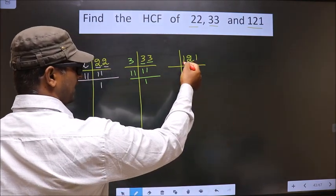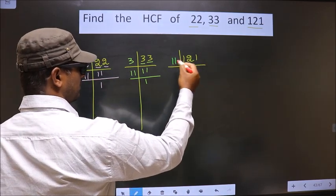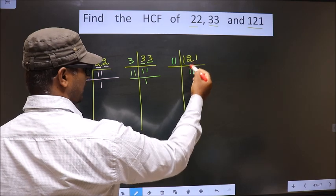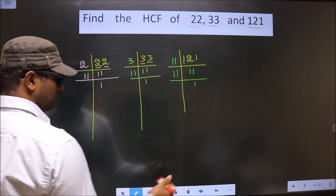Now, here we have 121. 121 is nothing but 11 square. So 11, 11 is 121. Now, 11 is a prime number. So we take 11 and 1.